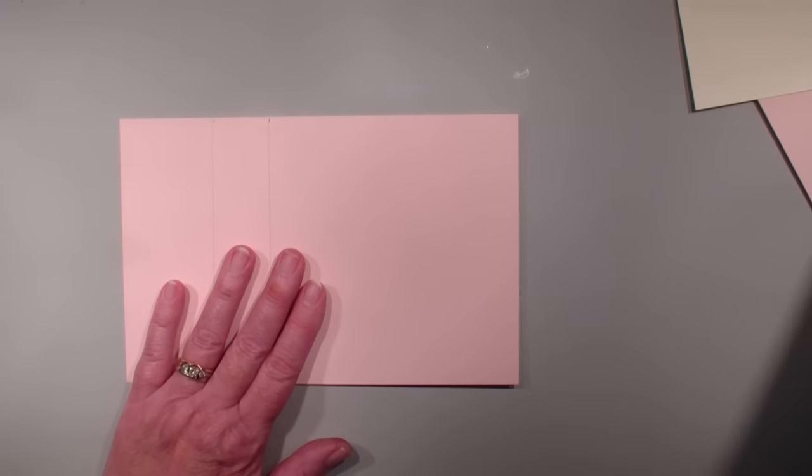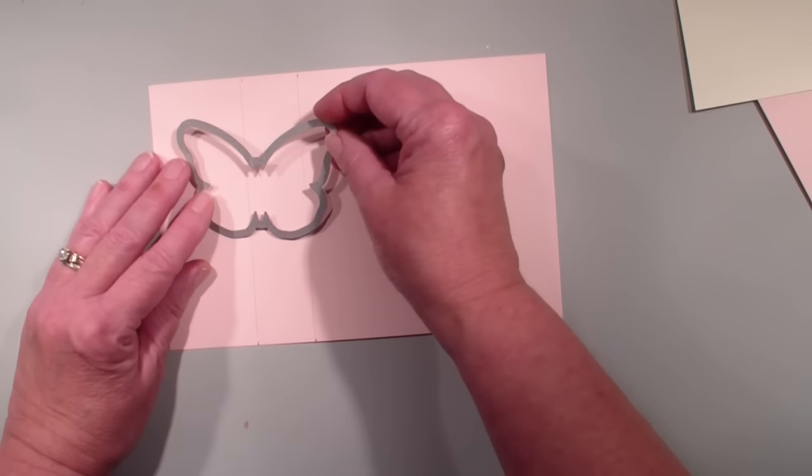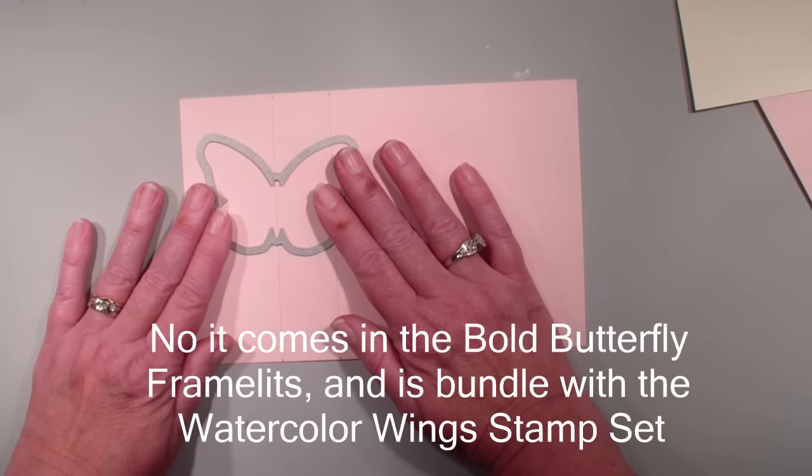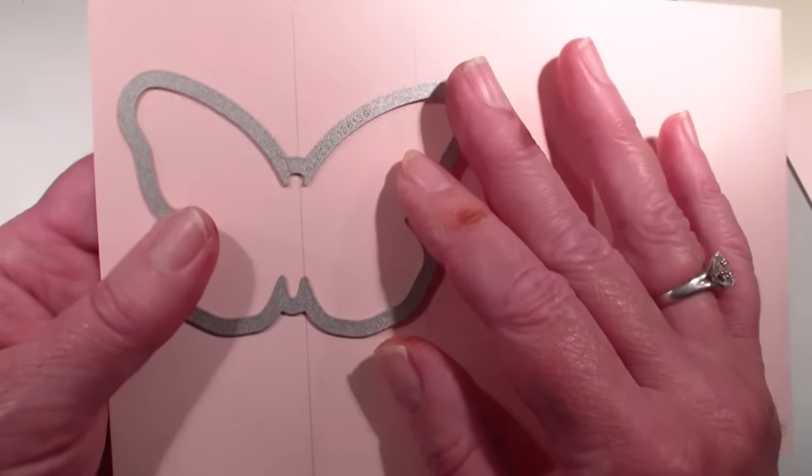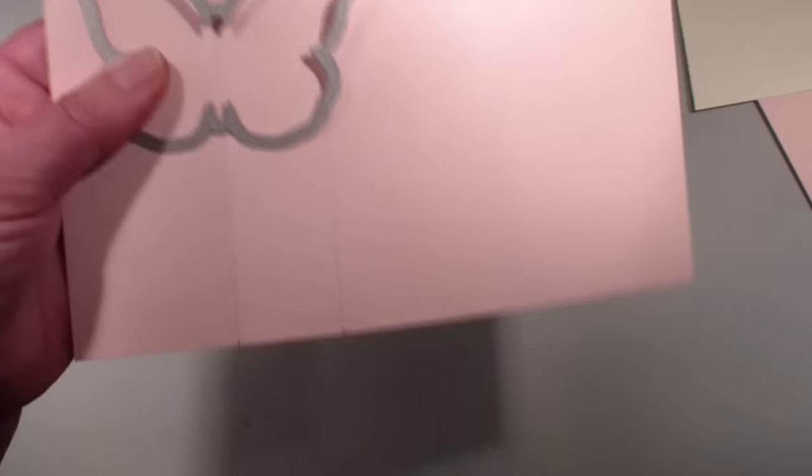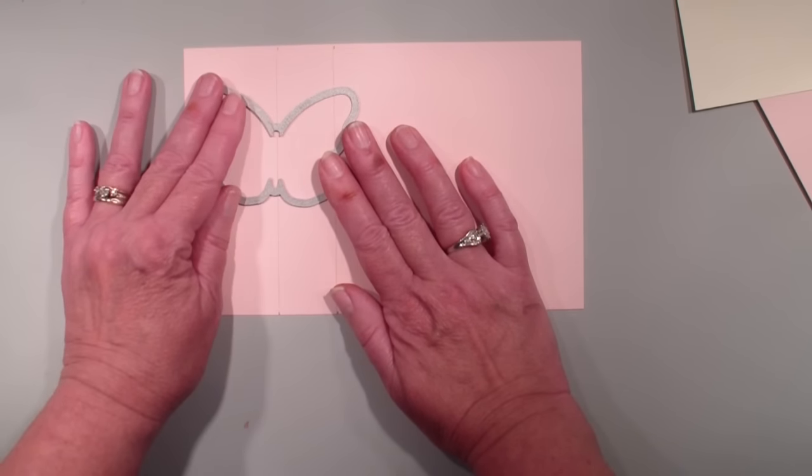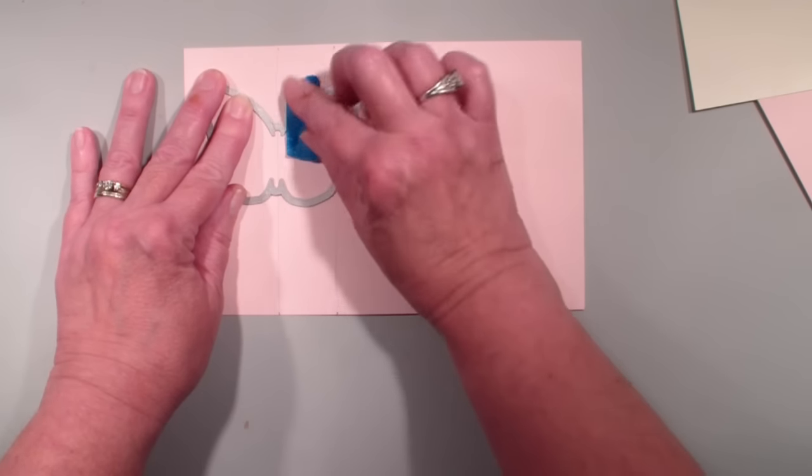Then what I'm going to do is I'm going to take that solid butterfly. This comes in the butterfly basics framelits and I'm laying the butterfly so the center of the body is on the center of that first pencil line.